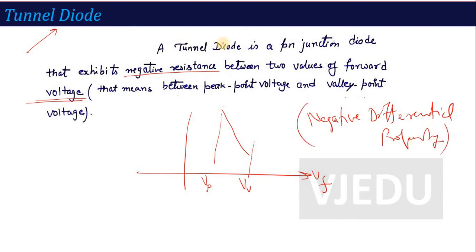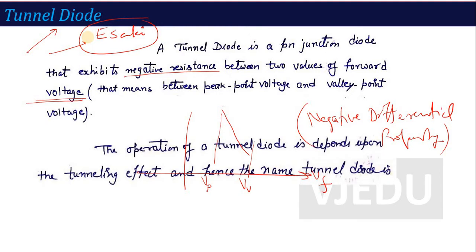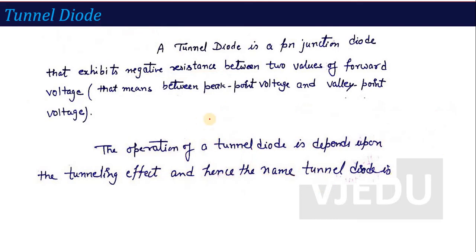This tunnel diode is also known as the Esaki diode, named after its inventor. Now let's talk about the main operation of the tunnel diode. If we talk about the negative resistance, this depends on the tunneling effect. The operation of the tunnel diode depends on what is called the tunneling effect, and that is why its name is tunnel diode.